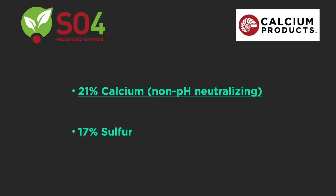So how are we applying sulfur at the PTI farm? One product I want to highlight is SO4, a pelletized gypsum from Calcium Products. This is a 21% calcium product — it will not adjust pH, it is pH-neutral — delivering 21% calcium and 17% sulfur. Gypsum provides some of the best response we've seen, largely due to that sulfur content. This product is mined out of Iowa.